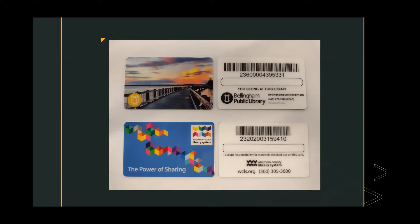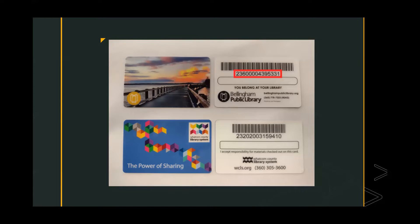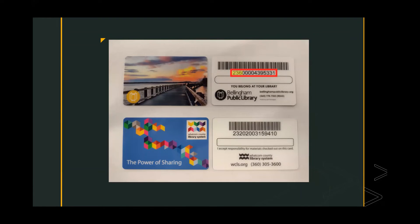Sometimes you will need to distinguish, when you log into library services, between the two systems. To clarify on the barcode: if your card starts with 236, that is a Bellingham Public Library card, so you would select Bellingham Public Library. You do need the barcode to match up if it's asking which library system you're logging in with. If it doesn't ask and it's just a generic login with barcode and PIN, you don't need to distinguish. For those of you with Whatcom County Library System cards, your card starts with 232.